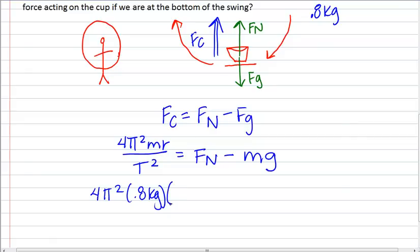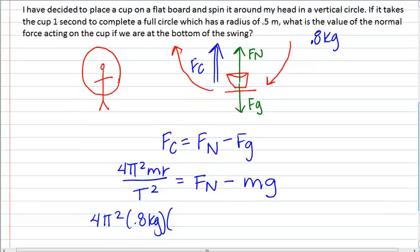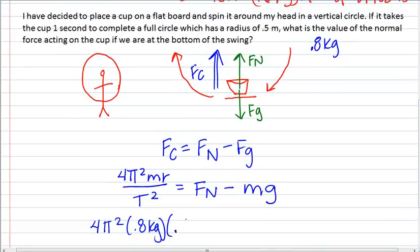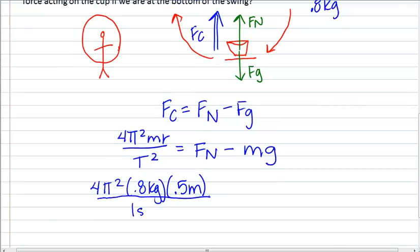Then we're going to plug in our radius here. We are told in the problem that we have a radius of 0.5 meters. We're going to divide that by our period squared, which is simply 1 second.